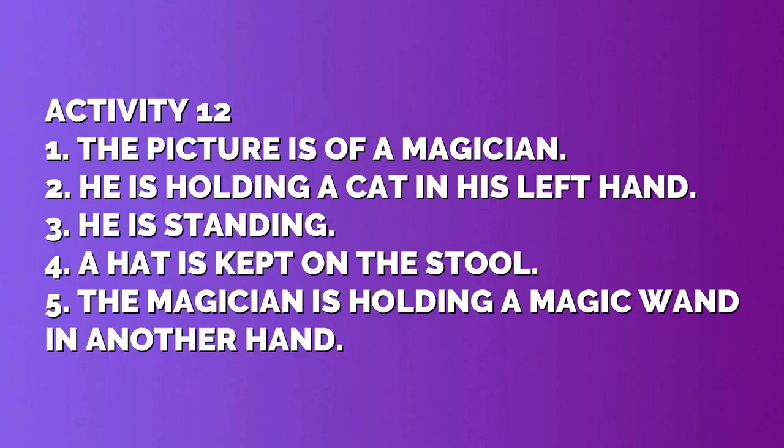In Activity 12, look at this comic picture and write five sentences about it. 1. The picture is of a magician. 2. He is holding a cat in his left hand. 3. He is standing. 4. A hat is kept on the stool. 5. The magician is holding a magic wand in another hand.